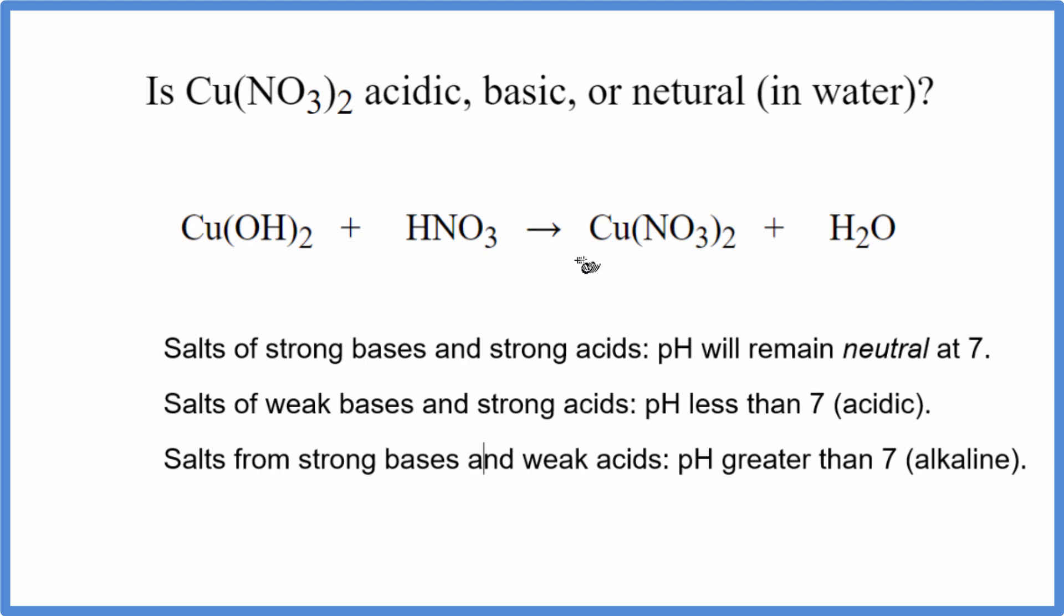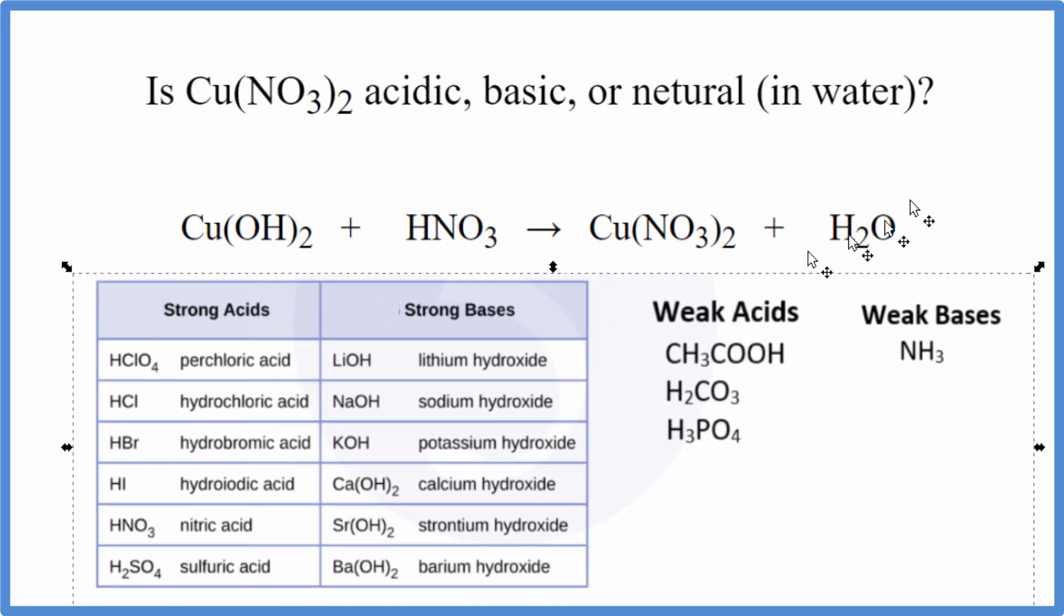That'll give us our copper 2 nitrate and water since it's a neutralization reaction. So we have our equation. We need to know the strengths of each one of these substances in order to use these rules. This table here is really helpful, probably a good idea to memorize. So if we look at the table...